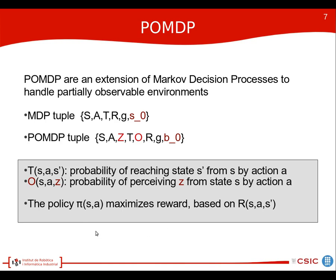We have a probability distribution among the states instead of a single starting state. The POMDP solvers obtain a policy — a mapping from states to actions — that maximizes the long-term reward based on the reward model, which requires at least 95% certainty of having isolated one piece of clothing.